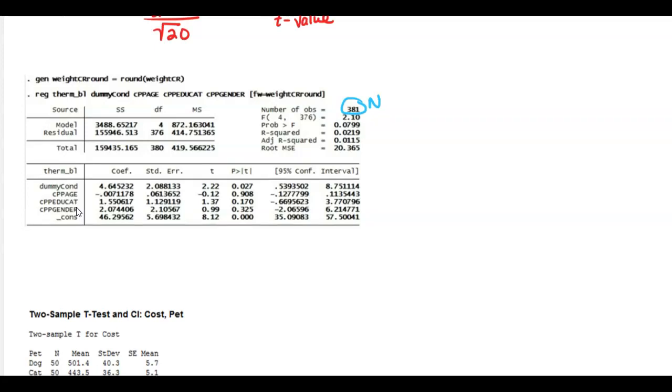It gives us a lot of other stuff. And so you kind of have to, depending on what you're looking for, you see these five things. These are the different things that you're looking for. If you wanted the dummy condition, it would have a p value of 0.027 and it would have this confidence interval. If you're looking for CP page, it'd have a p value of 0.908 in this confidence interval. These are the different options of what you're looking for. And then these are the p values. And then these are the confidence intervals.